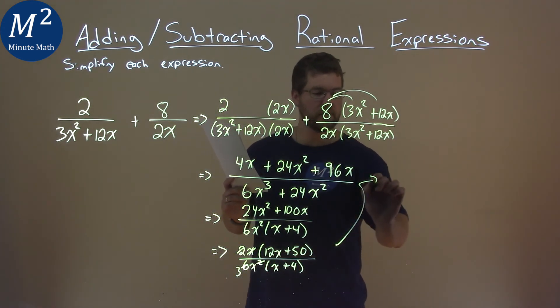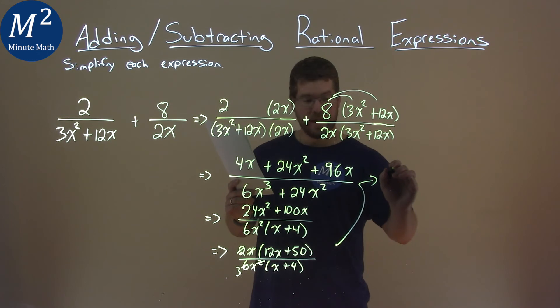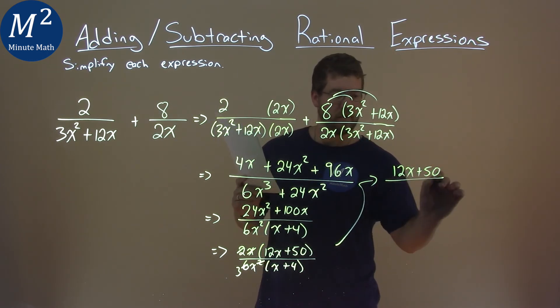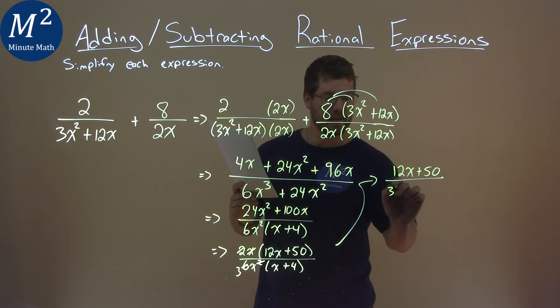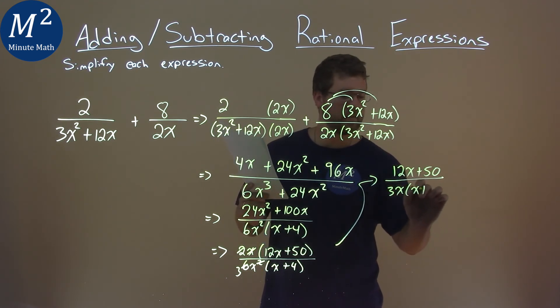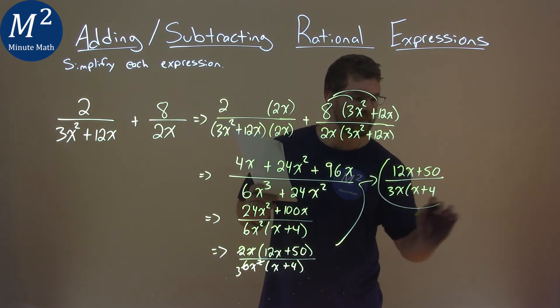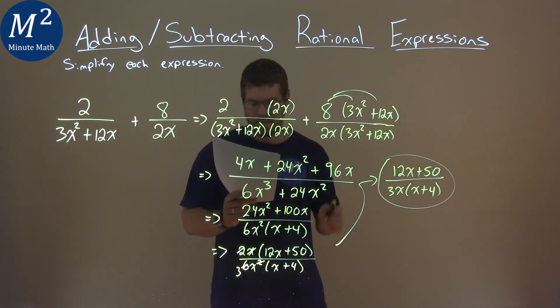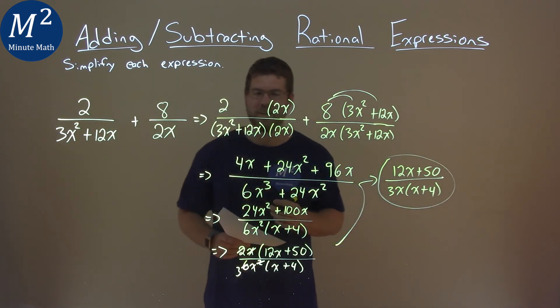So my final answer is 12x plus 50 over 3x times x plus 4. Don't forget the parentheses. And again, that is our final answer.